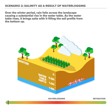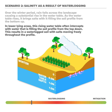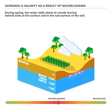Over the winter period, rain falls across the landscape causing a substantial rise in the water table. As the water table rises, it brings salts with it, filling the soil profile from the bottom up. In lower lying areas, this rising water table often intercepts with water that is filling the soil profile from the top down. This results in a waterlogged soil with salts moving freely throughout the profile. During spring, the water table starts to recede, leaving behind salts at the surface and in the subsurface of the soil.